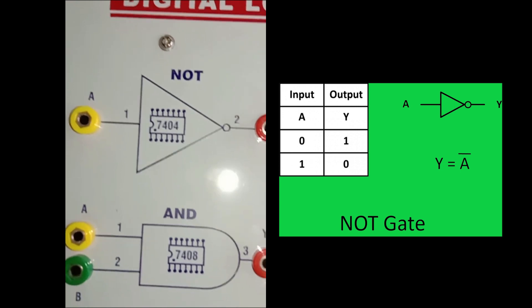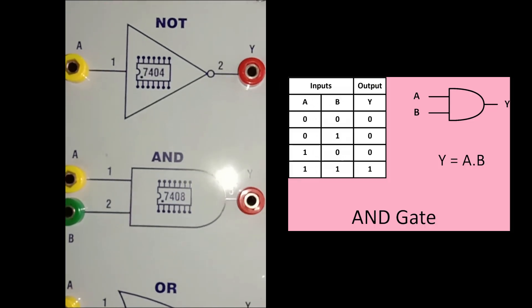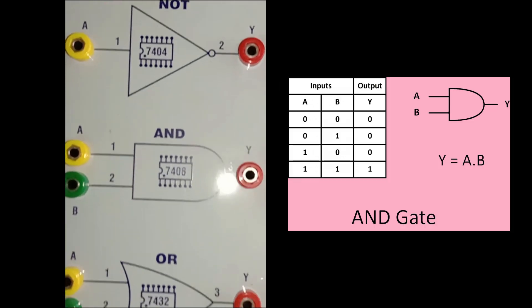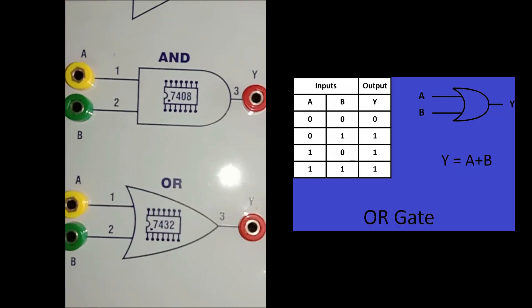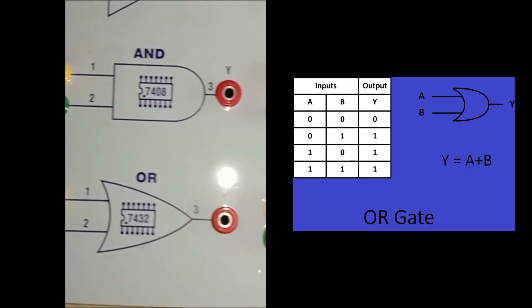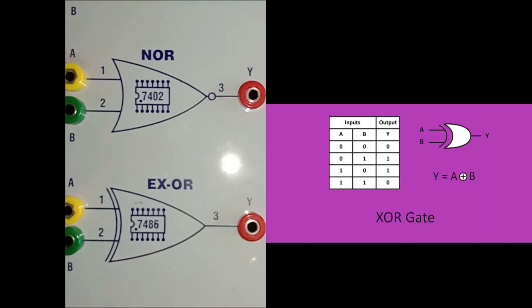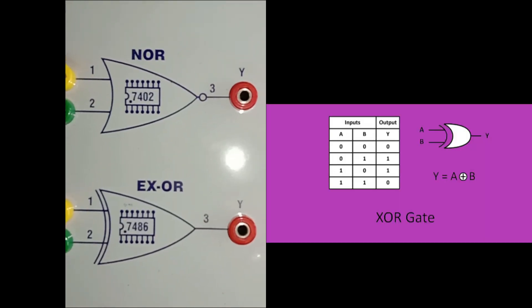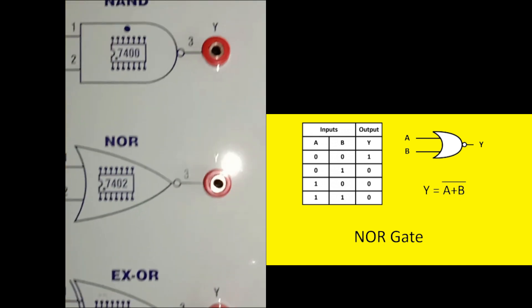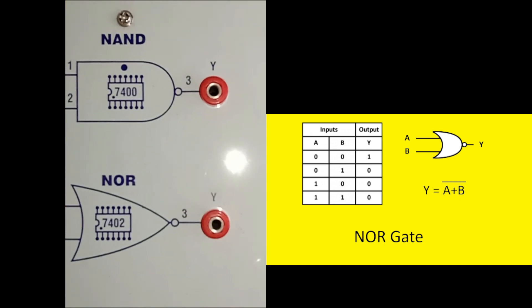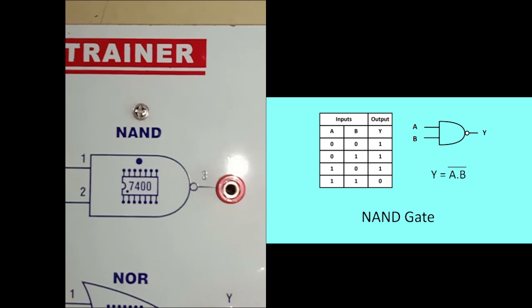This is the circuit of NOR gate. The next is the circuit of AND gate. The last is the circuit of OR gate. Parallelly we have the circuit of XOR gate, above which is the circuit of NOR gate, and at the top is the circuit of NAND gate.